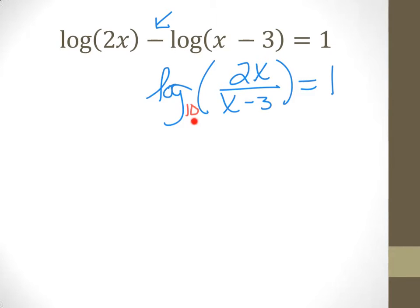We're going to convert to exponential: 10 to the first equals what's inside. So that gives us 10 equals 2x over x minus 3.